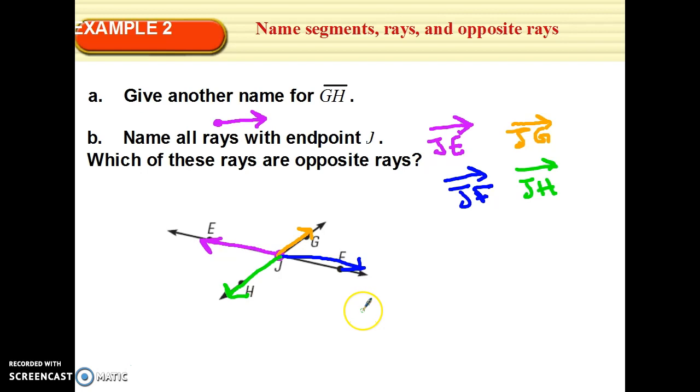Which of these rays are opposite rays? Opposite rays share a common end point and they go in opposite directions forming a straight line, forming a 180 degree angle. JE is opposite of who? JF. These two are opposite. And JH is opposite of? JG. Those are opposite rays.